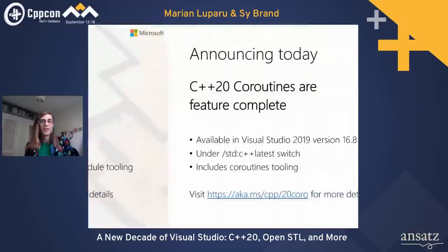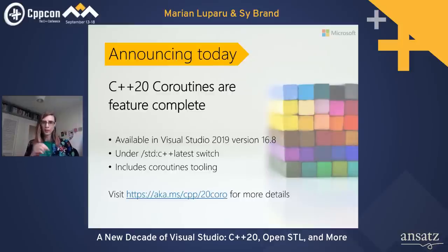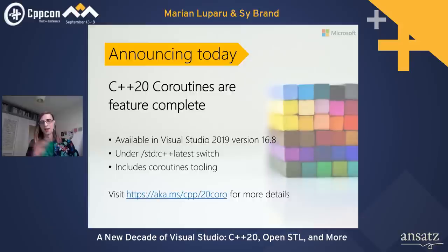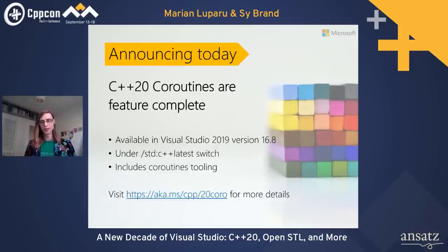C++20 coroutines are also feature complete. We've had support for the coroutines TS for a while; this update includes everything that made it into C++20 coroutines. If you have code using the old TS style, you can still use the /await switch and the experimental coroutines header. For the new features, pass /std:c++latest and use the standard coroutines header. This support also includes coroutines debugging — you can set breakpoints, hit them where expected, and see your call stack.